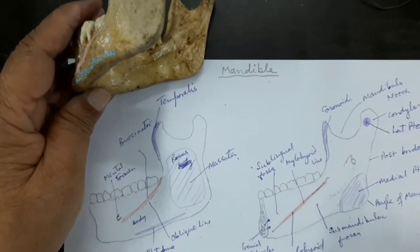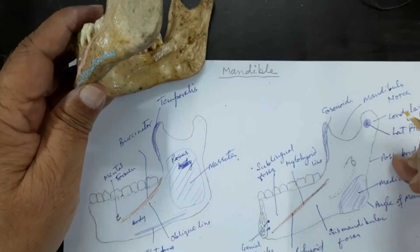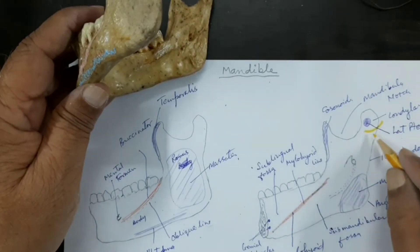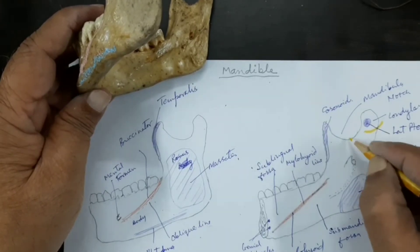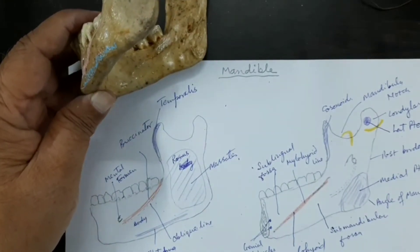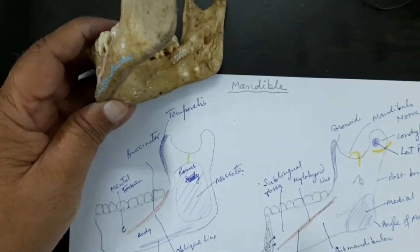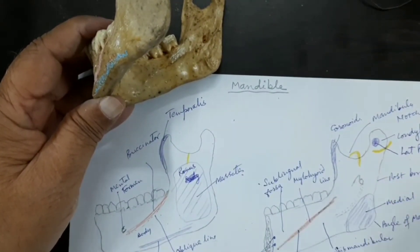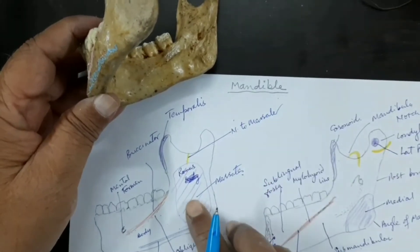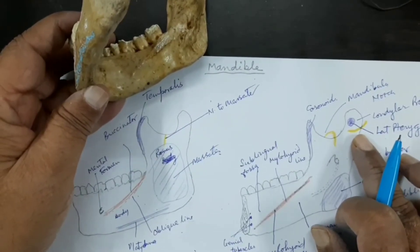Now let us see the nerve relations. There is a nerve that winds around the neck of the mandible, and this is the auriculotemporal nerve. Then in the mandibular notch, going from the notch towards the masseter muscle — deep to the masseter — is the masseteric nerve. Please note this down: the masseteric nerve goes to the masseter muscle.